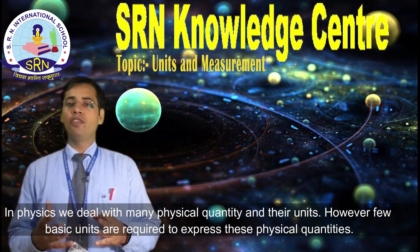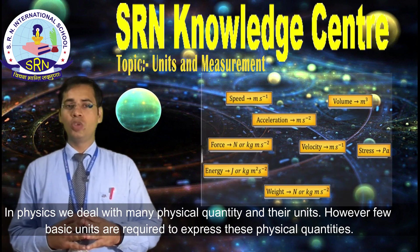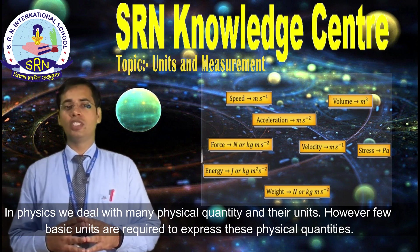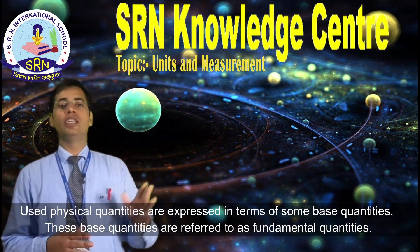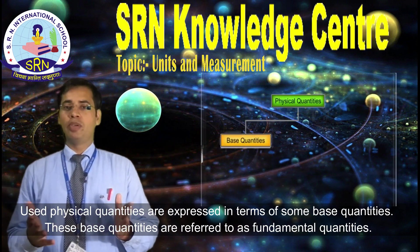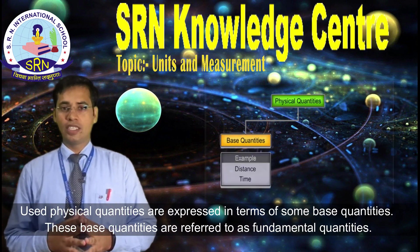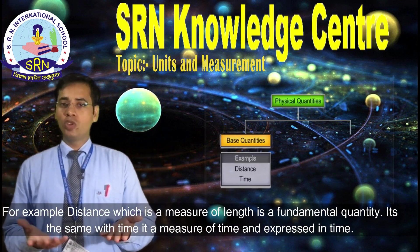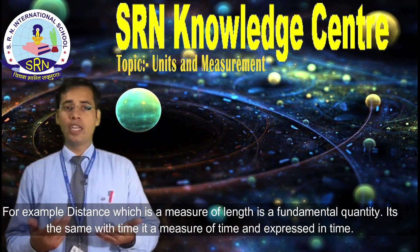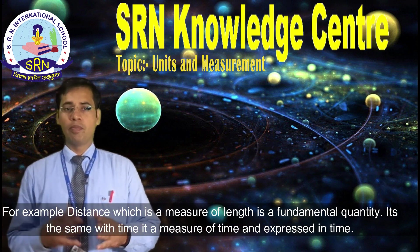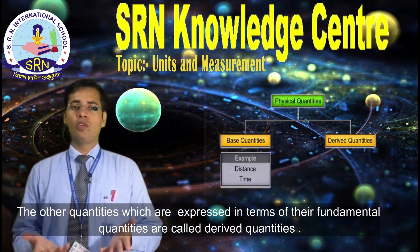In physics, we deal with many physical quantities and their units. However, few basic units are required to express these physical quantities. Those physical quantities are expressed in terms of some base quantities, referred to as fundamental quantities. For example, distance, which is a measure of length, is a fundamental quantity. The same with time. Other quantities which are expressed in terms of fundamental quantities are called derived quantities.